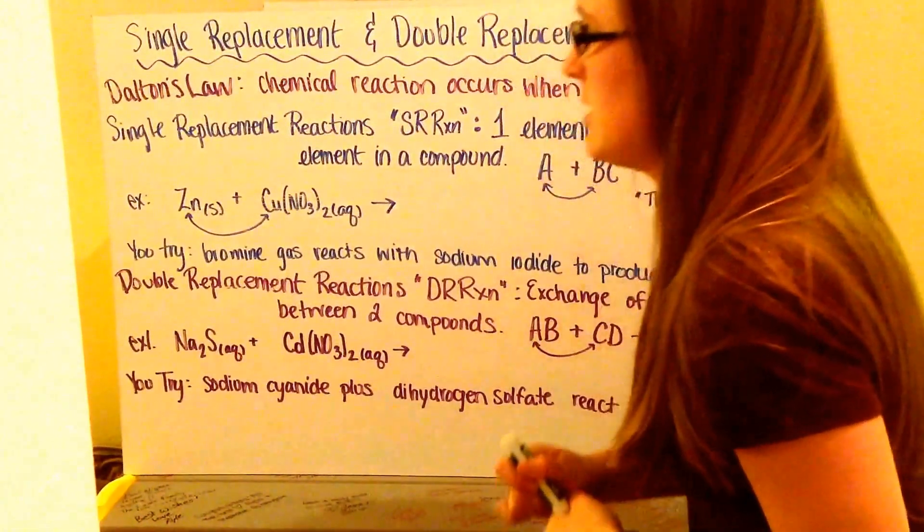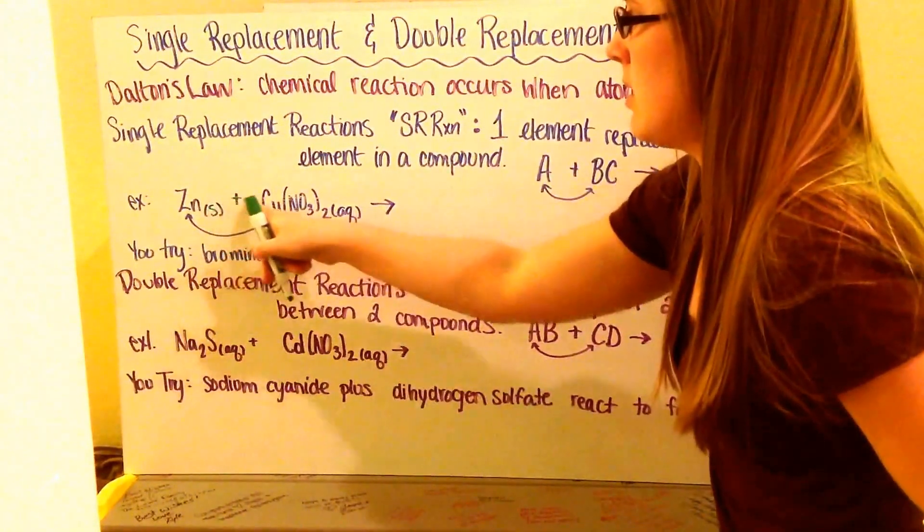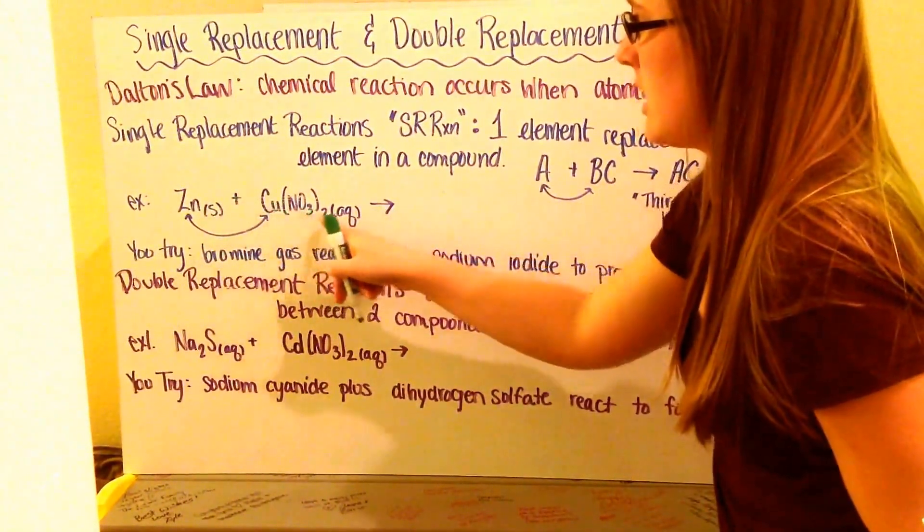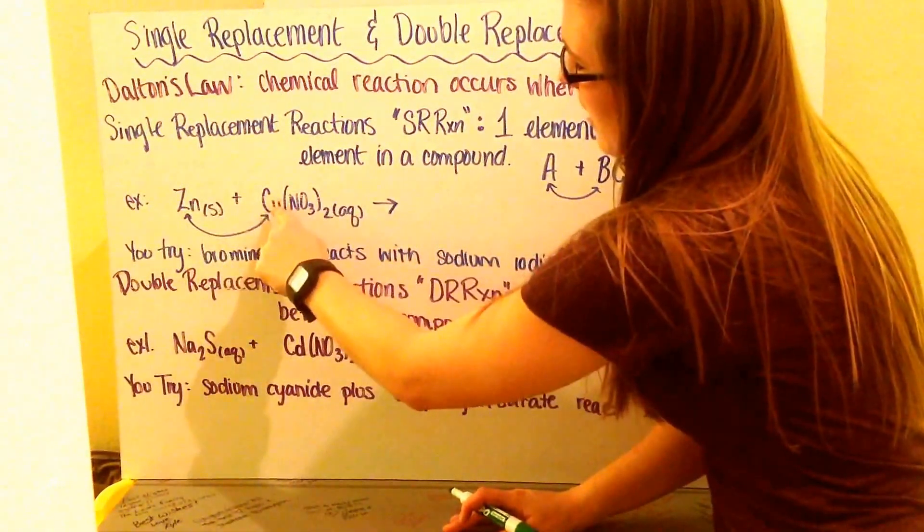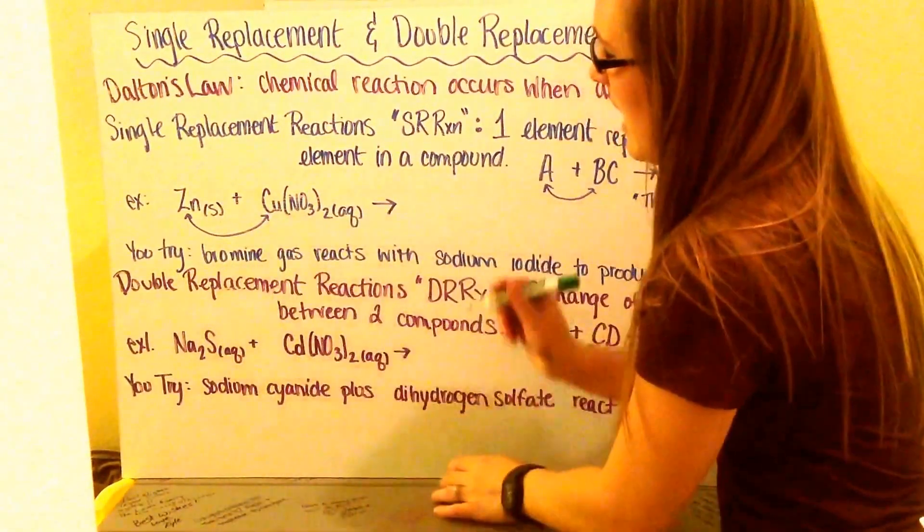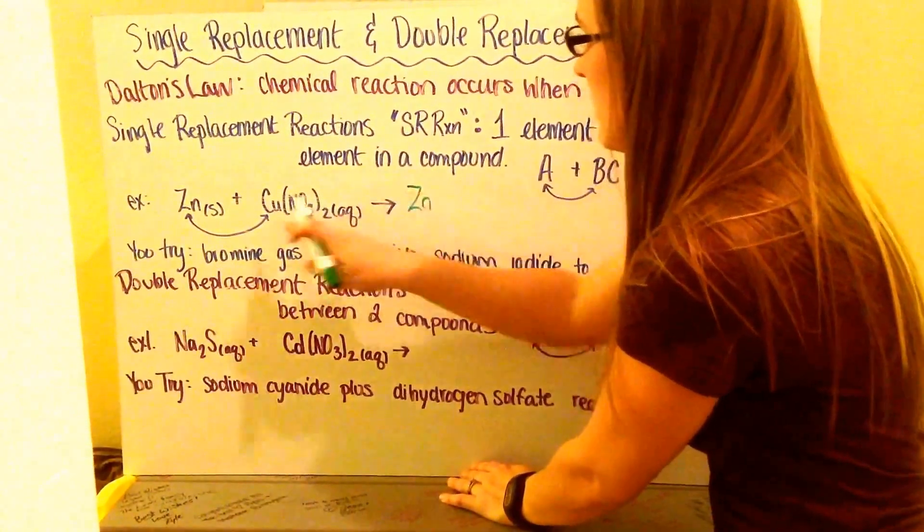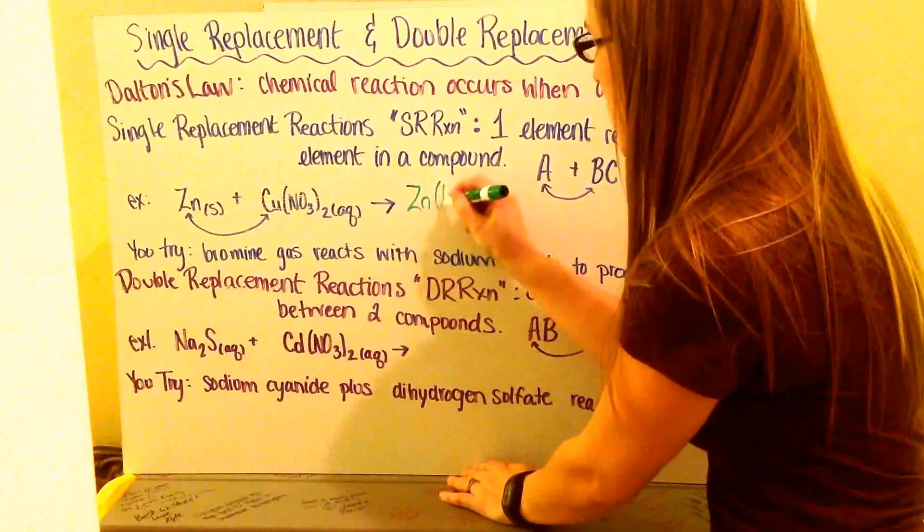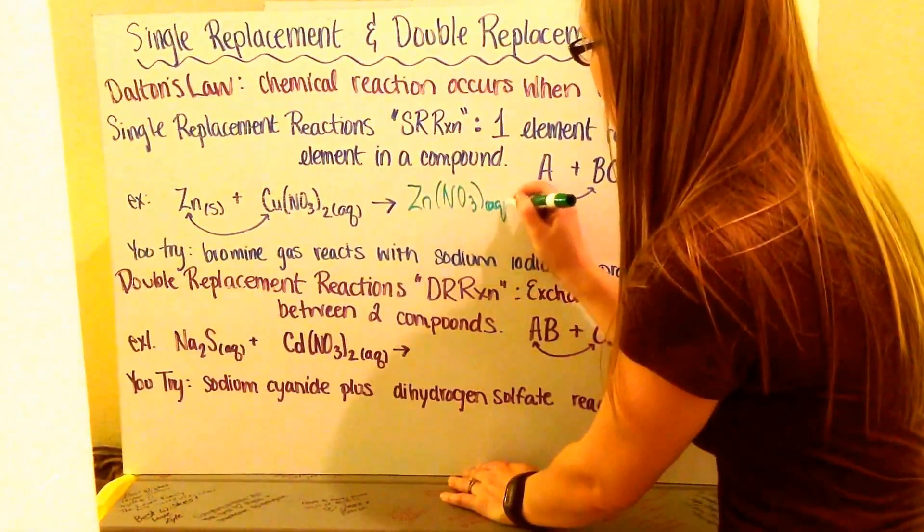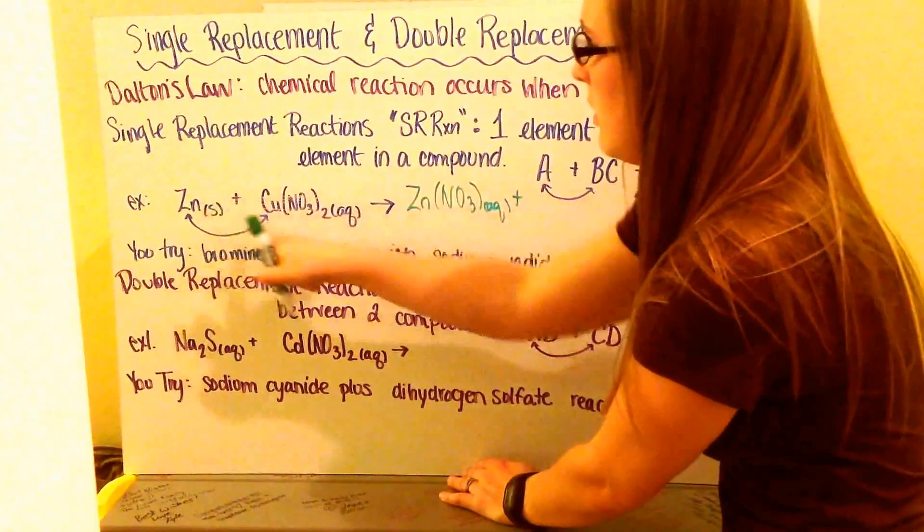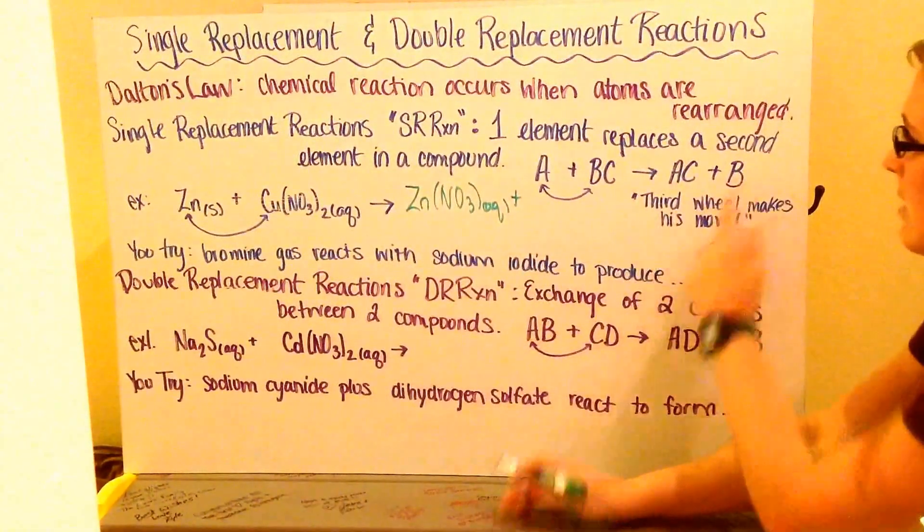So, let's put this into practice. If I'm given zinc metal, which is Zn solid, plus copper to nitrate, which is aqueous, what is it going to produce? Well, my zinc metal is going to pop out and switch out with my copper nitrate. So, I'm then going to have zinc with my nitrate, along with, so my zinc and my copper switch, and that then leaves my zinc by itself.